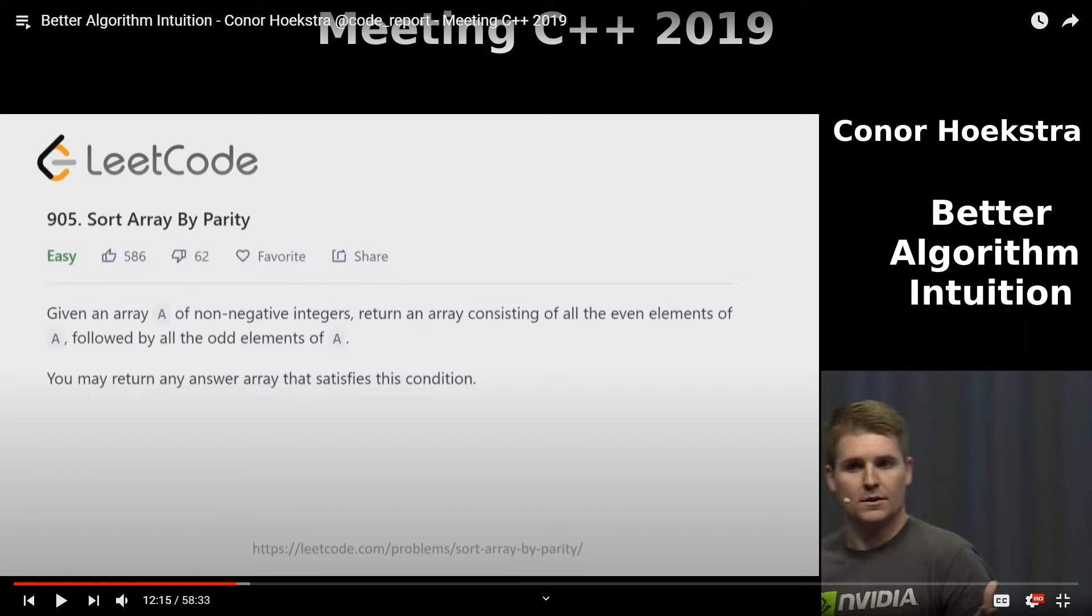So basically, you are doing some kind of predicate sort such that all the even elements are at the front and all the odd elements are at the back.